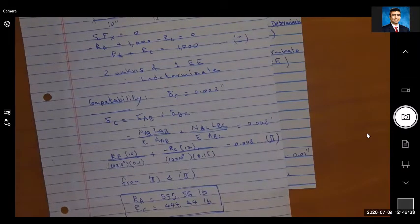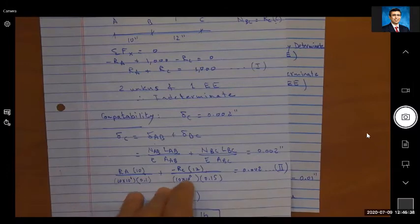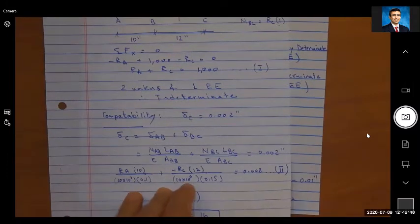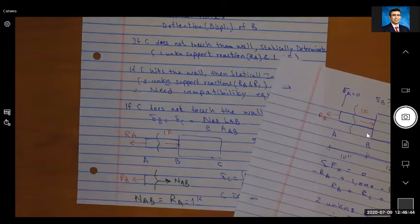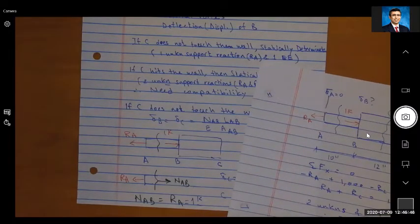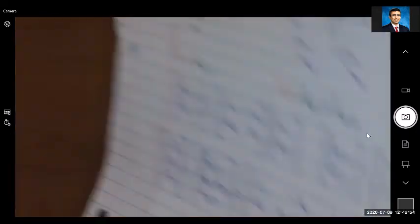Now this is the second equation for Ra and Rc. Between equation one and two, I can solve for Ra and Rc. And once we have Ra and Rc, we can find the displacement at B, Rc, and everything else. So this is the classical method that you have done and have seen in solid mechanics.